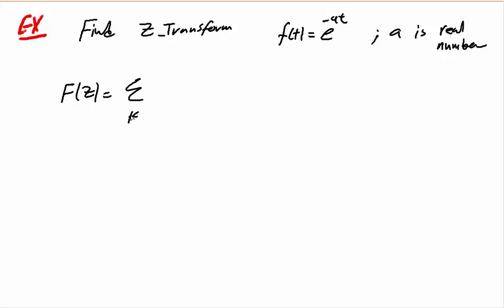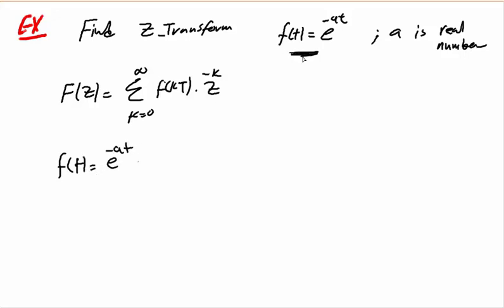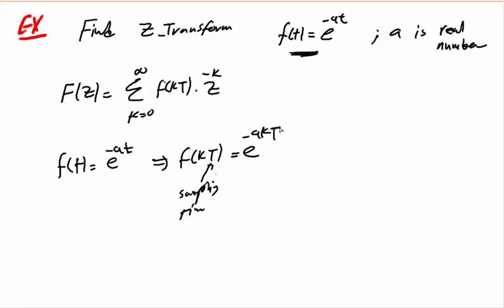We know the general form of F(z) will be equal to the summation from k equals zero to infinity of f(kT) times z to the power of minus k. Since f(t) = e^(-at), we substitute t with kT, so f(kT) = e^(-akT). T here is the sampling time.